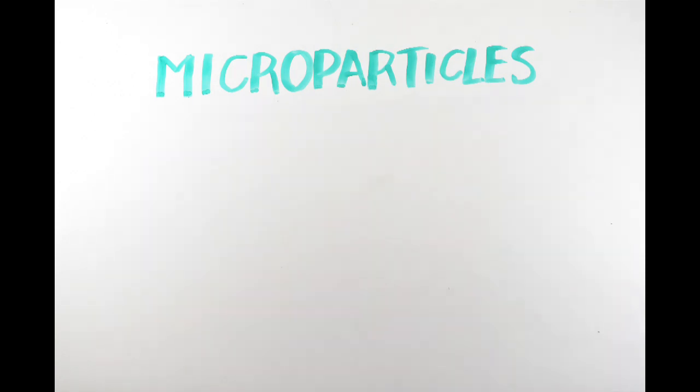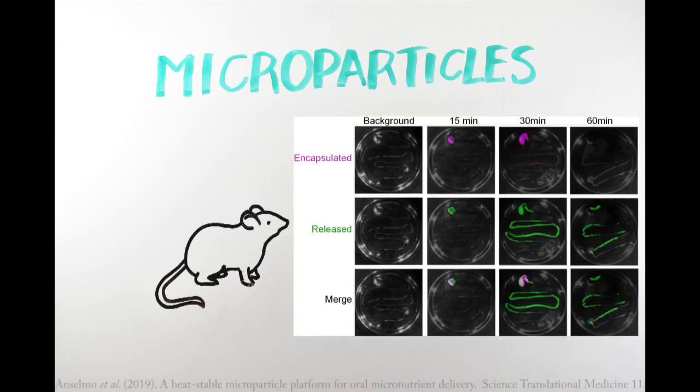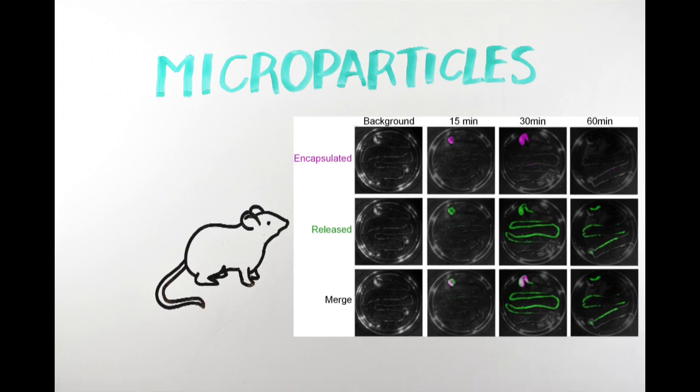These promising results led to tests in mice to track the microparticle movement and release in the digestive system. The microparticles were encapsulated with a special fluorescent dye that changed colors when the microparticles released their contents, allowing scientists to track if the contents were encapsulated or released. Mice consumed the fluorescently loaded microparticles, and then their digestive systems were imaged at varying time points. These images show that at first, both encapsulated and released contents exist in the stomach. Then as the particles are digested and move into the intestine where nutrient absorption occurs, they are opened.